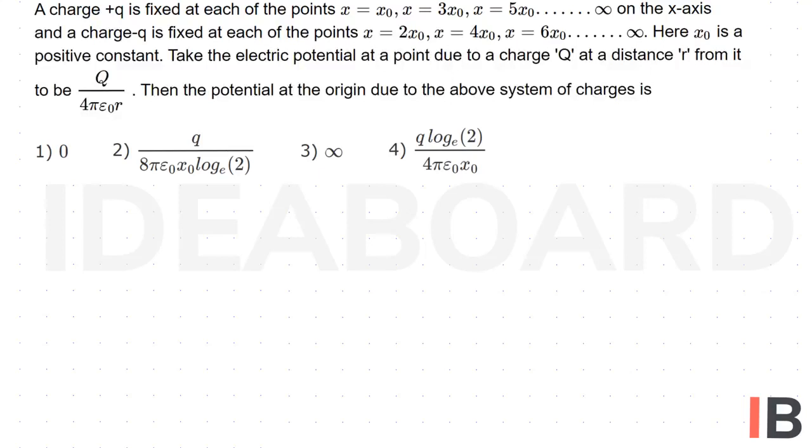Now in the given case, we know the expression for potential due to a point charge: v is equal to 1 by 4 pi epsilon not into q by r. But here this q is common for all the charges, so we have 1 by 4 pi epsilon not into...